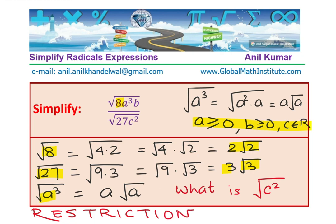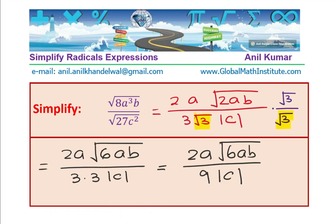Writing restrictions is important part of simplifying the radical expressions. In this particular case, c, which is in denominator, cannot be equal to zero but can be any real numbers. How about a and b? It is slightly complicated.